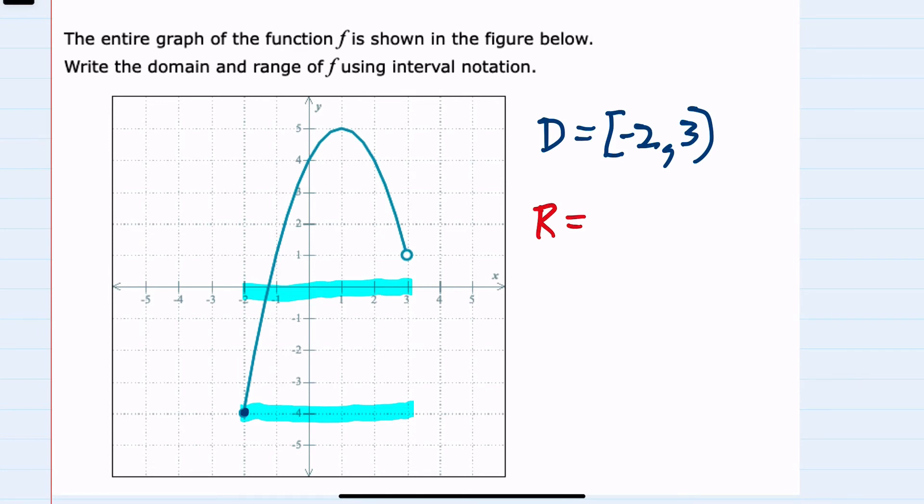However, we're going vertically now. The y values go from down here all the way up to here, and on the y axis that is everything with a lower bound of negative 4.